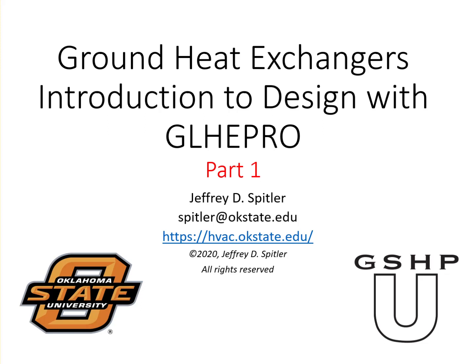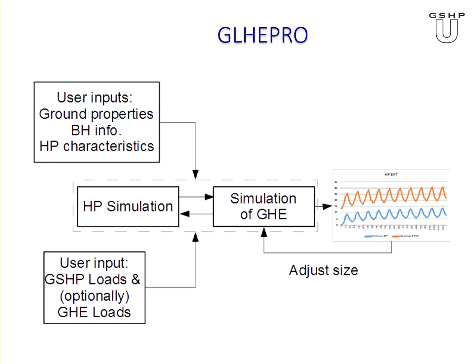Welcome to our lecture on design of ground heat exchangers. This is an introduction to using the GLHE Pro program — really just an overview of the whole process, with other lectures digging deeper into various parts. At the core of GLHE Pro is a coupled simulation of a ground heat exchanger. That simulation gives us temperatures, which feed into the heat pump simulation, which then tells us the heat extraction and rejection rates, varying with the building cooling and heating load depending on ground heat exchanger temperature.